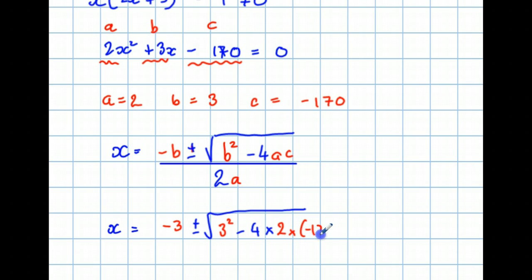And I suggest you put the minus number within a bracket. And that's all over 2 times A. Just 2 times 2.